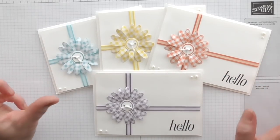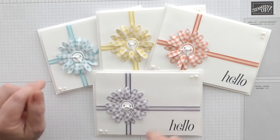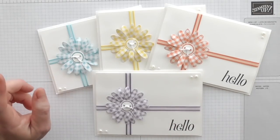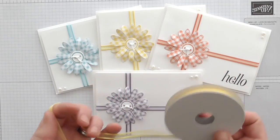Everybody's using it, everybody wants it, it's beautiful and there are five colors in the DSP and those five colors are the same five colors that are in the free organdy ribbon in the Sale-a-bration leaflet.